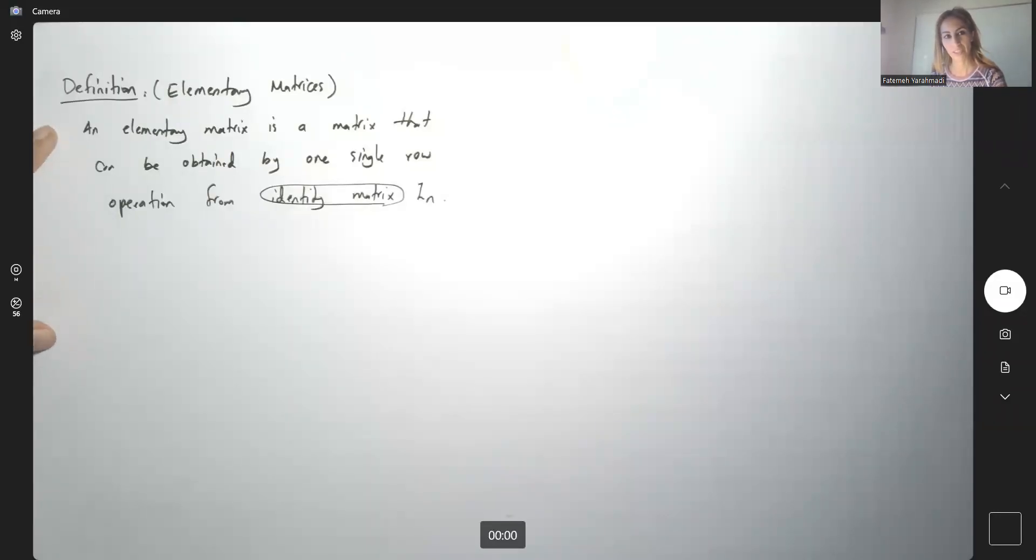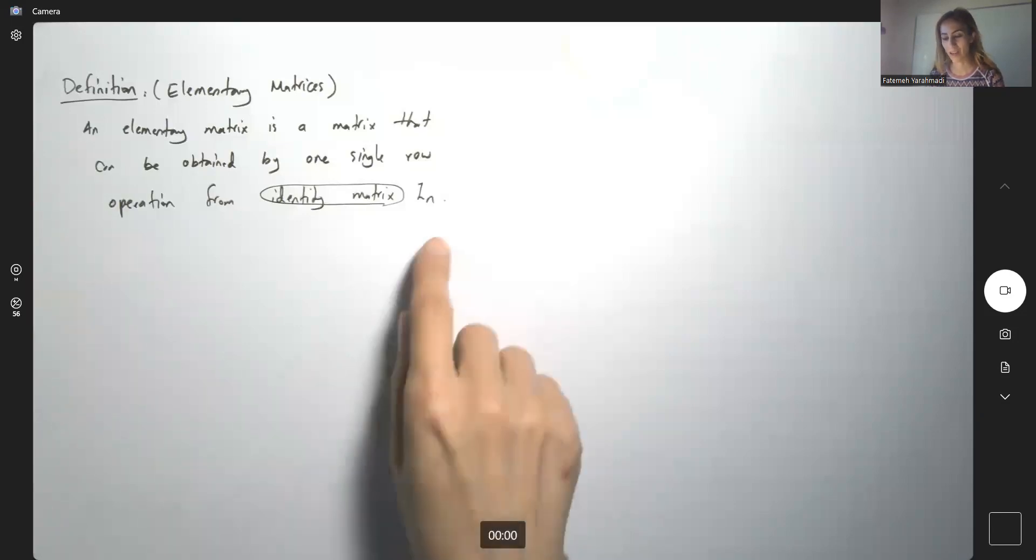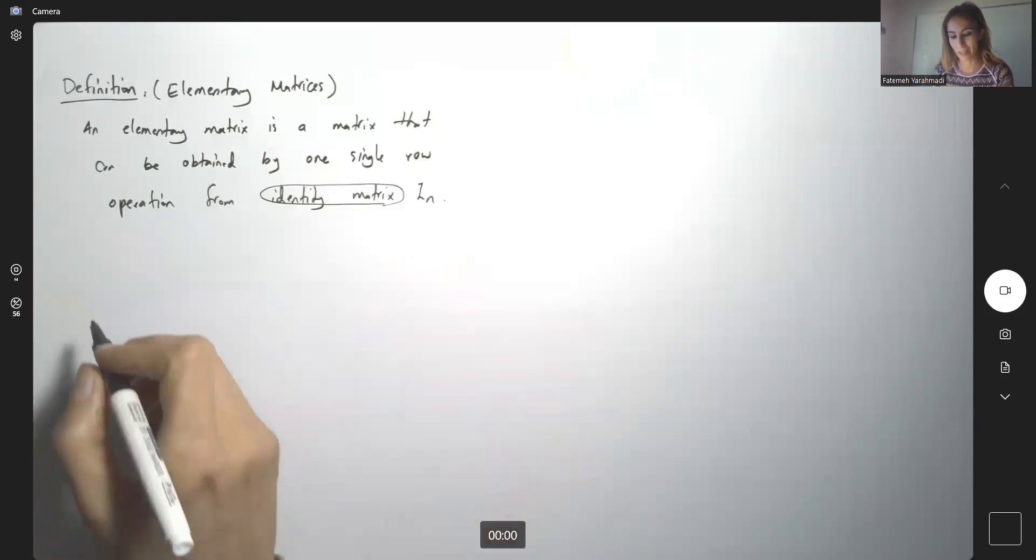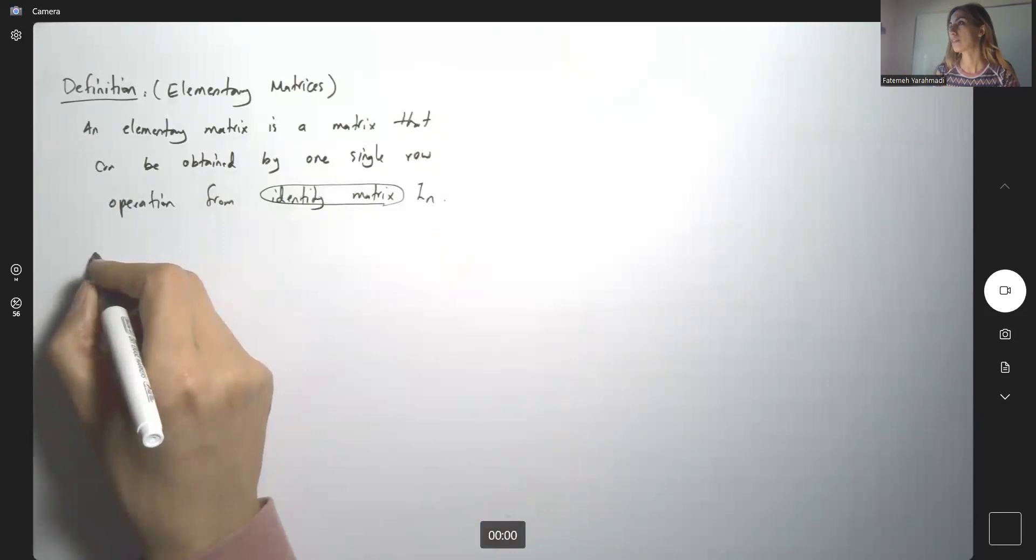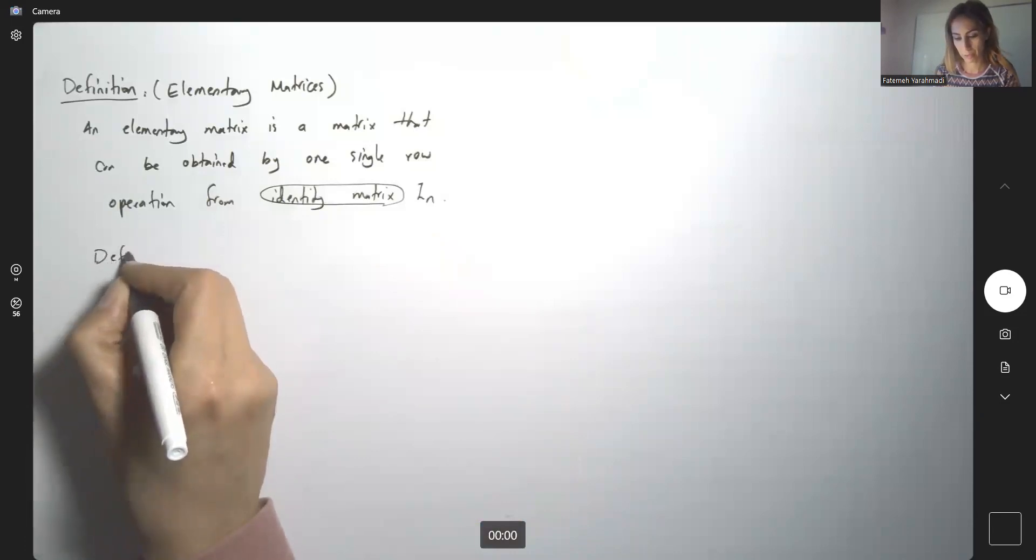Remember the definition of elementary matrices: an elementary matrix is a matrix that can be obtained by one single row operation from the identity matrix I_n. So why is this important? We have a definition here for you.